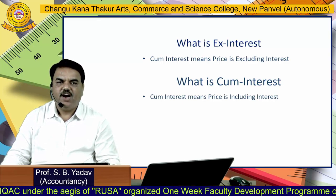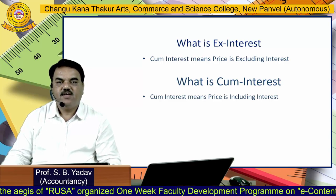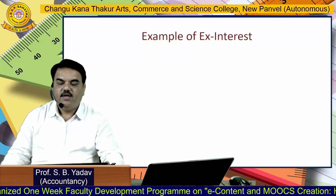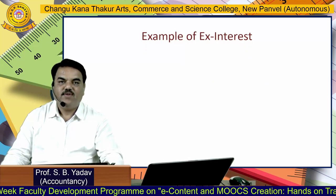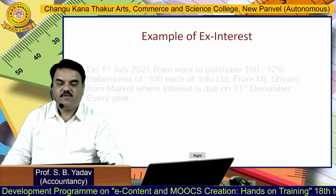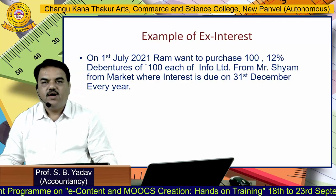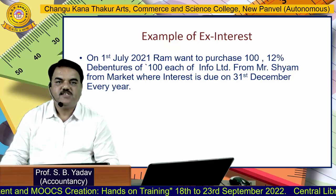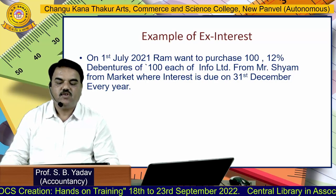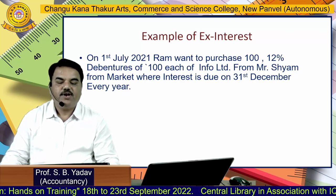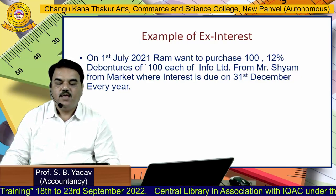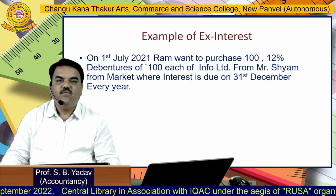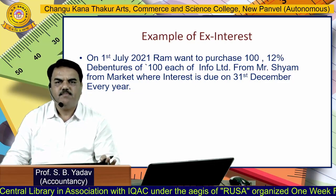I am going to explain X Interest and Cum Interest with the help of a suitable example. Say on 1st July 2021, Ram wants to purchase 100 debentures — 12% debentures of Rs. 100 each — of Info Limited from Mr. Shyam, where interest is due on 31st December every year. That means Info Limited is going to pay interest on 31st December only.